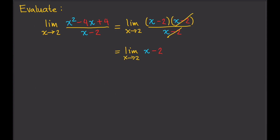Then, this is where you just plug in x equals 2. So that's 2 minus 2, and that gives us 0. So the limit of x squared minus 4x plus 4 divided by x minus 2 as x approaches 2 is 0.